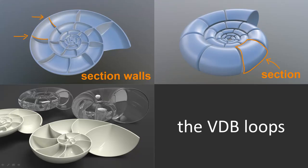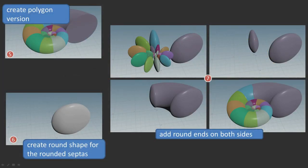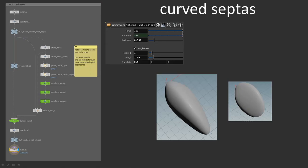The chambers need curved scepters — that is what the walls between the chambers are called. For that, I place the distorted sphere at each end of the chambers. This allows for quite a bit of art direction for the shape of the scepter. The sub-network lets you adjust the thickness of the object and uses a lattice node to distort it.